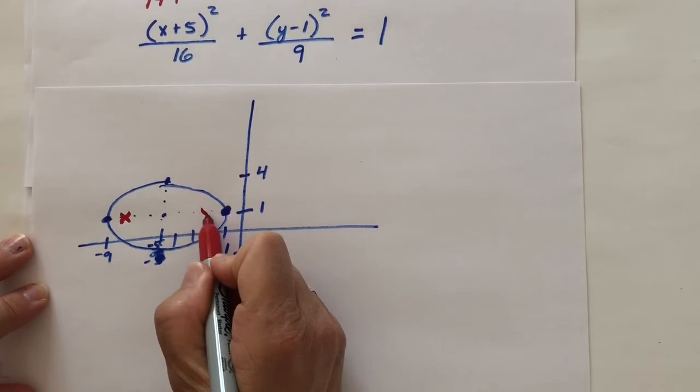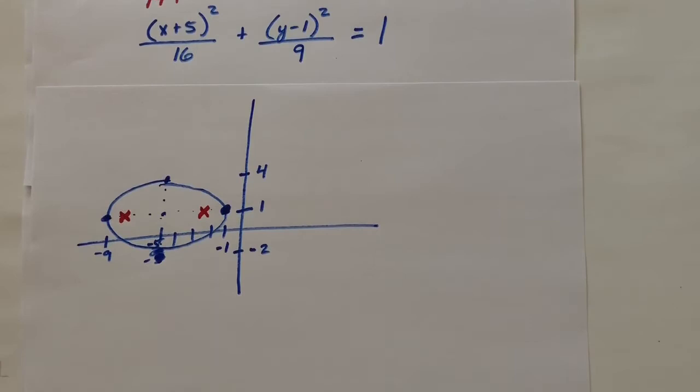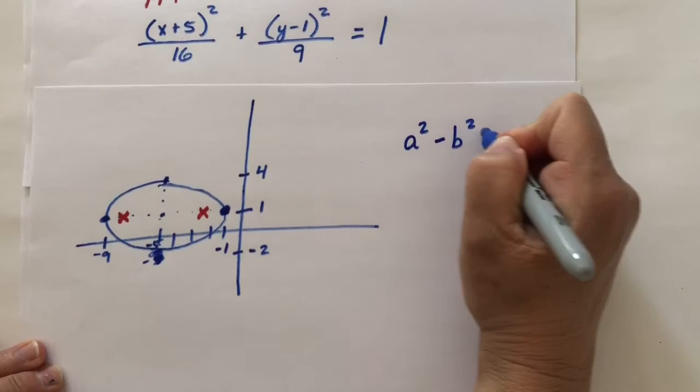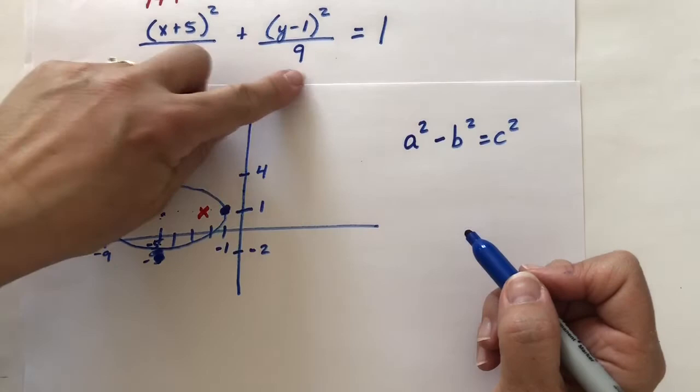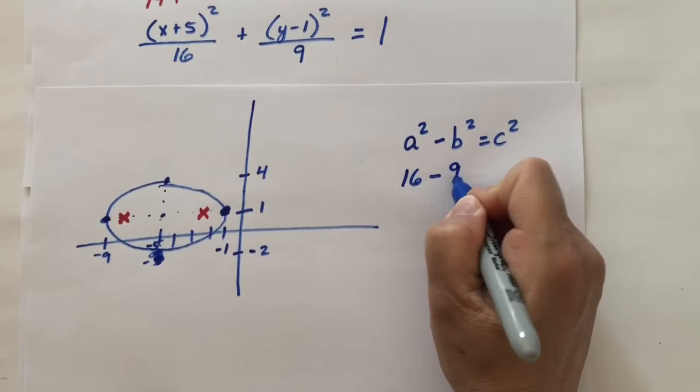Well, to find them, we know it's a² - b² = c². a² is the larger of the 2 denominators. So a² is 16. b² is the smaller denominator. And I solve this equation.